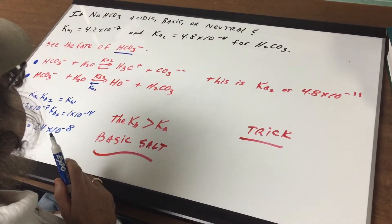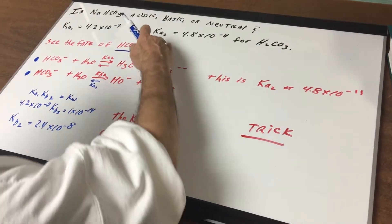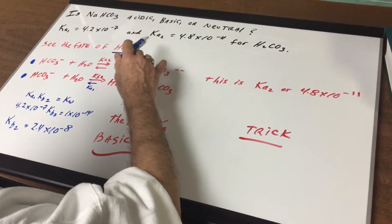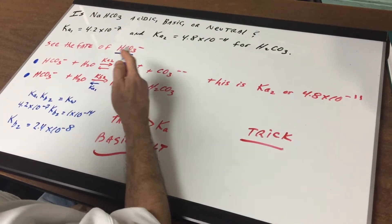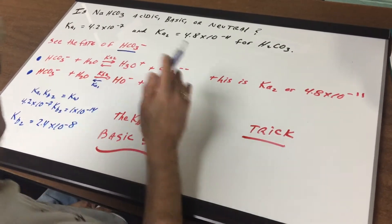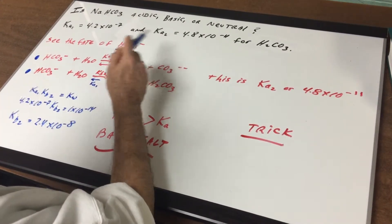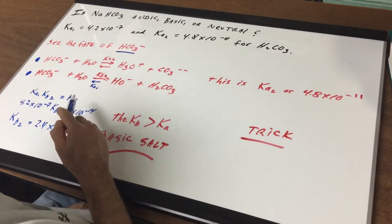Now the trick is we want to see does HCO3 minus want to react as an acid or does it want to react as a base, because it's amphiprotic, meaning it can go either way. It can act as an acid or a base.